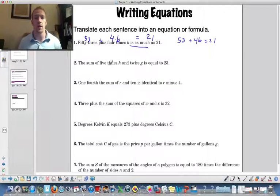The sum of 5 times h, so 5 times h, and twice g. So the sum is plus, so the sum of this and this. So plus 2g is equal to, obviously that's our equal sign, 23.